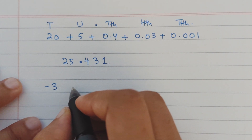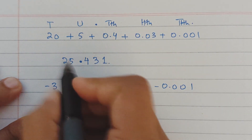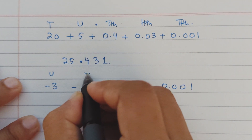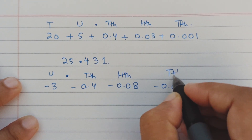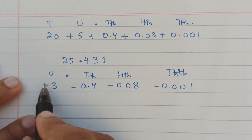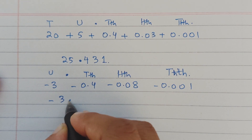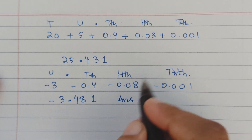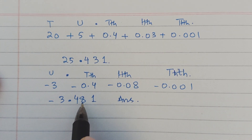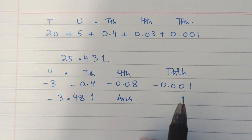The last part: minus 3, minus 0.4, minus 0.08, minus 0.001. Units, tenths, hundredths, thousandths — all in sequence with no digit missing. So the answer is minus 3.481. If any digit were missing in between, we would add a zero in its place.